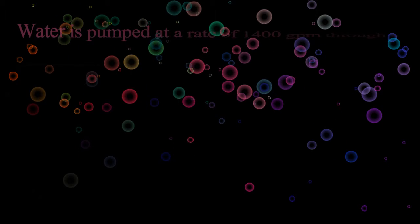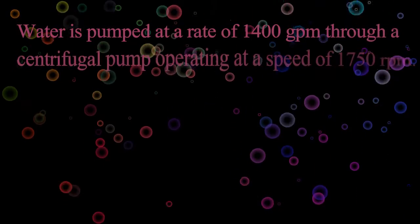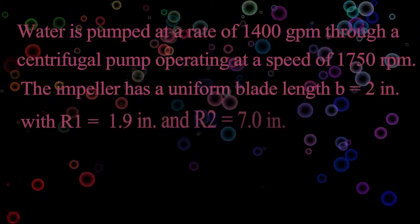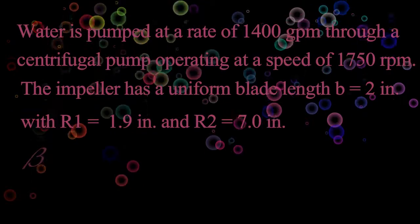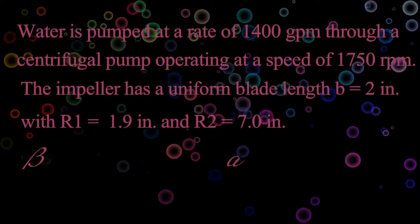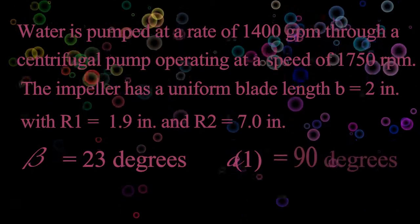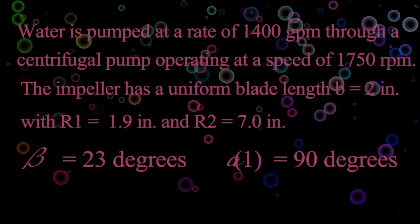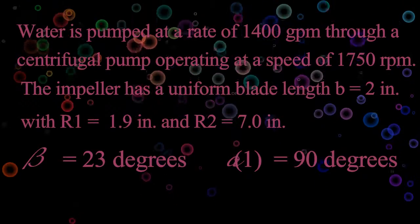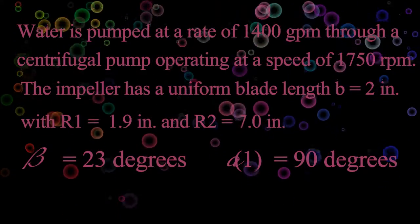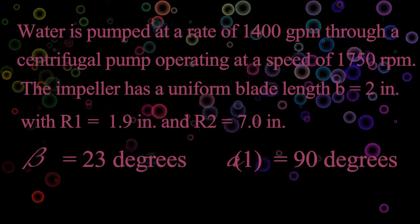Now let us solve some examples. The given problem: water is pumped at the rate of 1400 GPM through a centrifugal pump operating at a speed of 1750 RPM. The impeller has a uniform blade length b of 2 inches, with r1 equals 1.9 inches and r2 equals 7.0 inches, and the exit blade angle is beta equals 23 degrees. Assume ideal flow conditions.